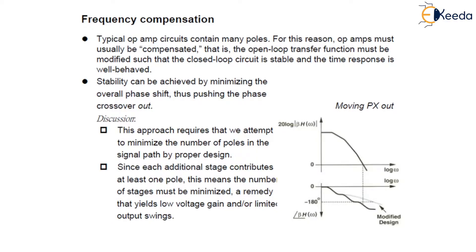The stability can only be achieved by minimizing the overall phase shift, thus pushing the phase crossover out. The need for compensation arises because the magnitude of beta does not drop to unity well before the phase angle of beta reaches minus 180 degrees. We can achieve stability by minimizing the overall phase shift and pushing the phase crossover out.